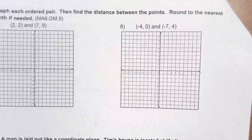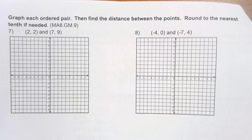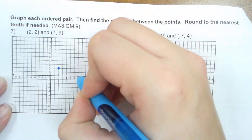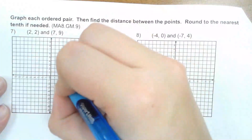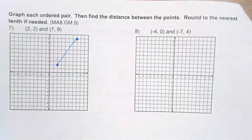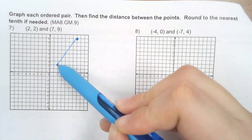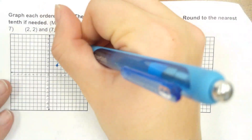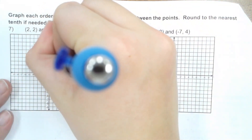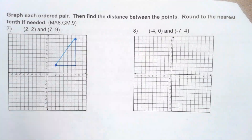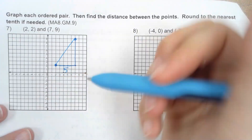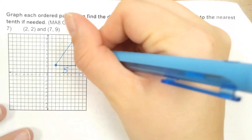Next page: we are going to graph each ordered pair and then find the distance between the two points. Plotting (2,2): right 2, up 2. Plotting (7,9): right 7, up 9. To find the distance of a diagonal on a coordinate plane, you cannot just count the diagonal. You have to create a right triangle because we can count the horizontal and vertical legs. My bottom leg is 5 units, and my vertical leg is 7 units.